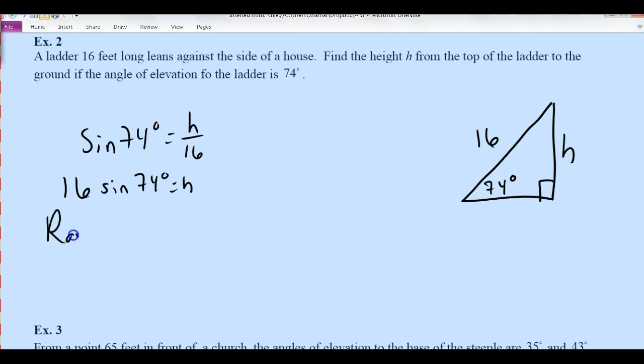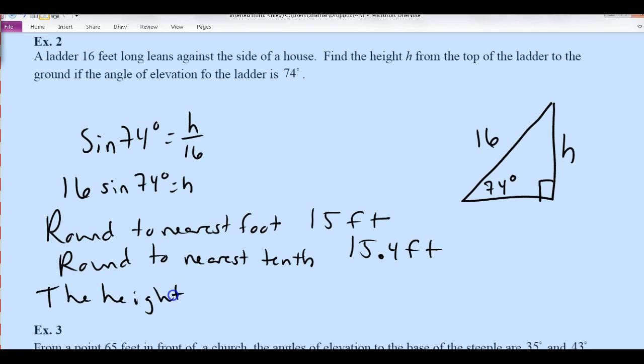As you're rounding, if we were round to the nearest foot, that means no decimals at all. You would call it 15 feet, but if I was asking you to round to the nearest tenth, you'd have to round to one decimal place, which would be called 15.4 feet. So depending if it matters or if it's stated, otherwise just make sure that you've got good rounding. So in the end, I'm going to say the height from the top of the ladder to the ground is 15.4 feet. I'm going to go one decimal point to the tenths.